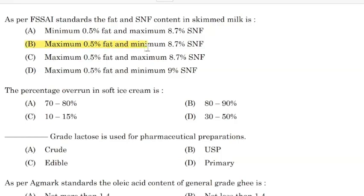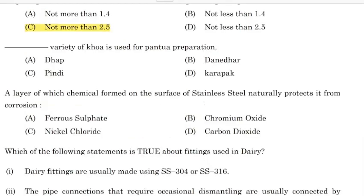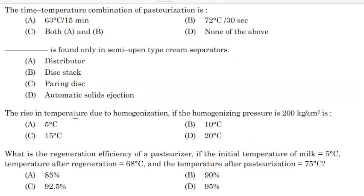Percentage overrun in soft ice cream is — Correct answer: Option D — 30 to 50%. The fresh variety of chenna is used for Paneer preparation — Correct answer: Option E.